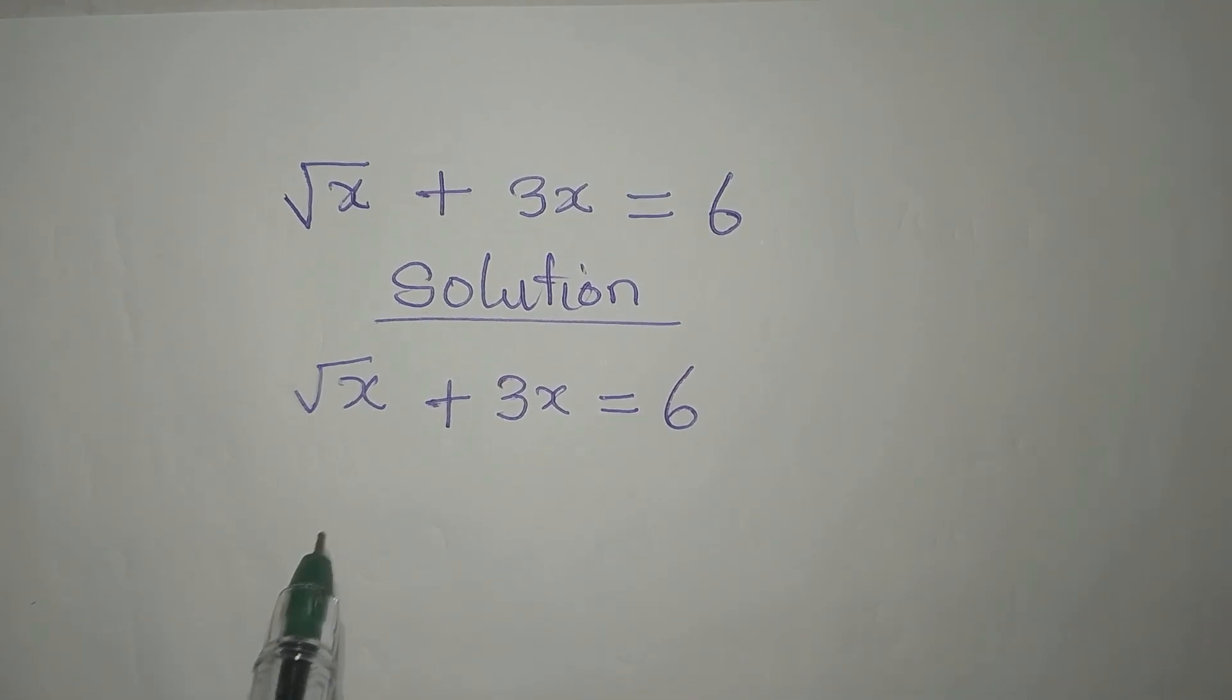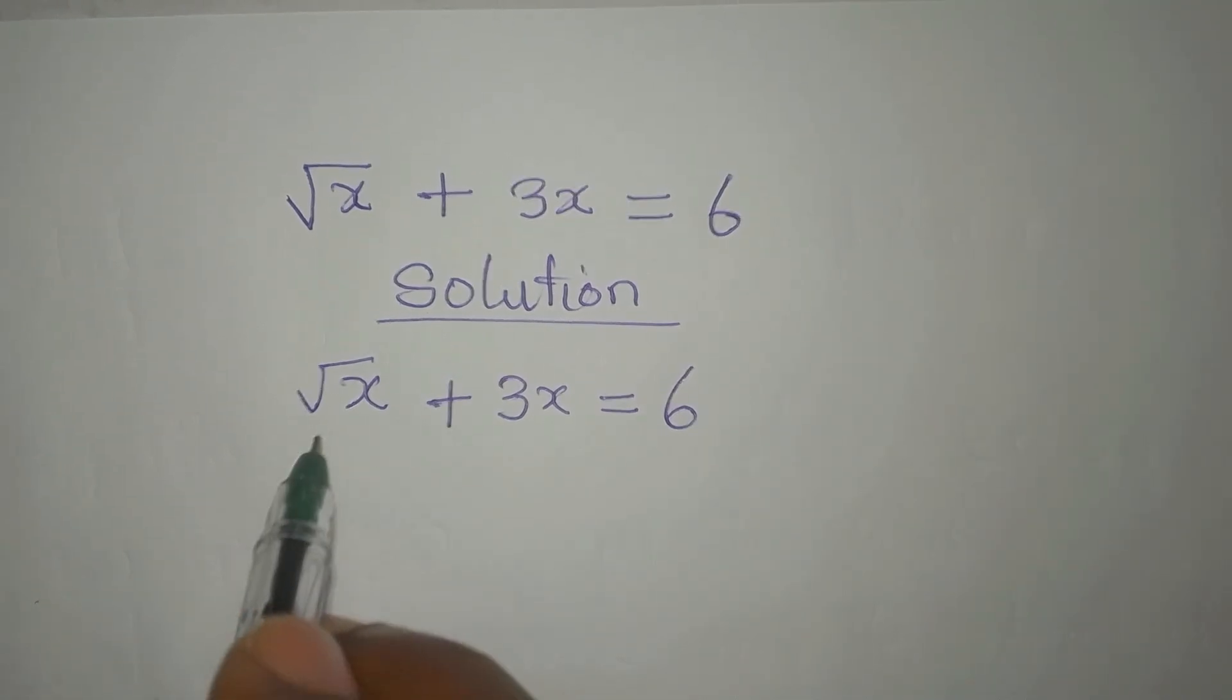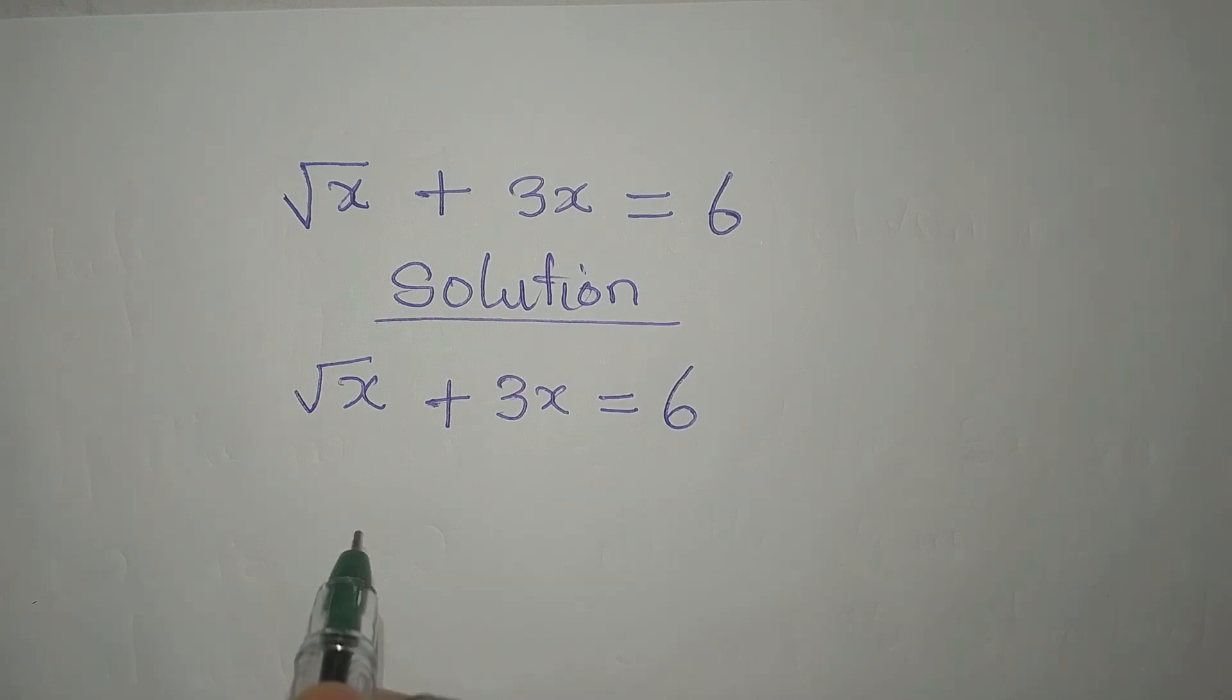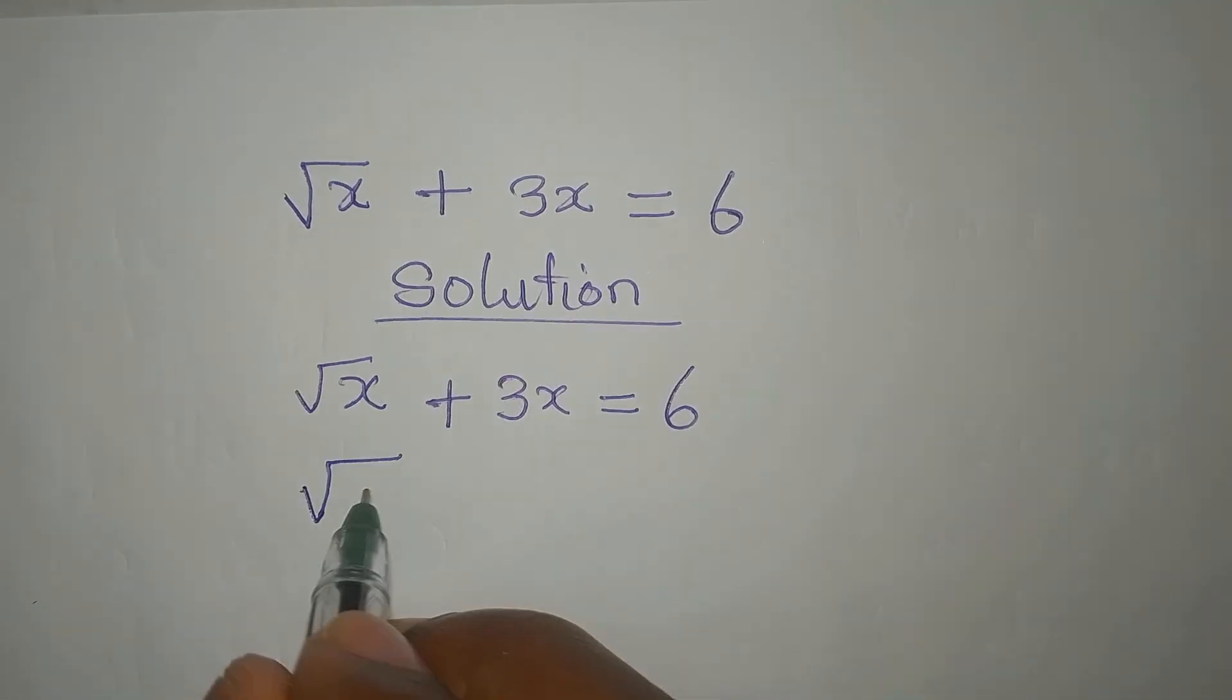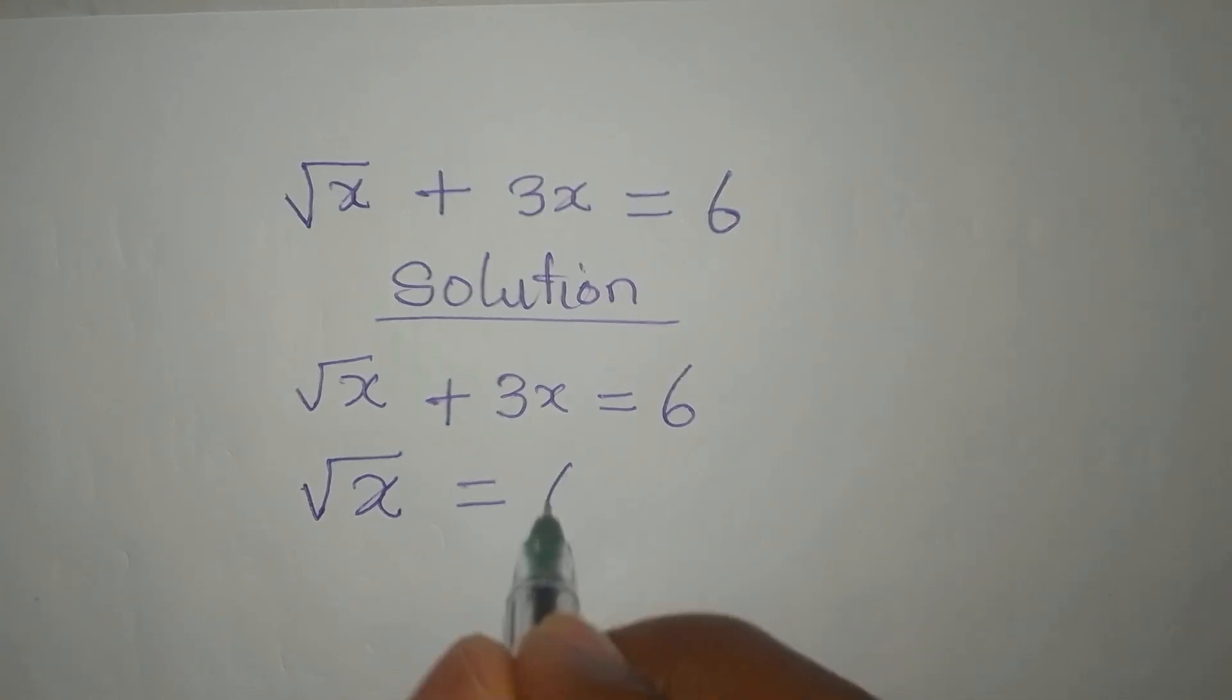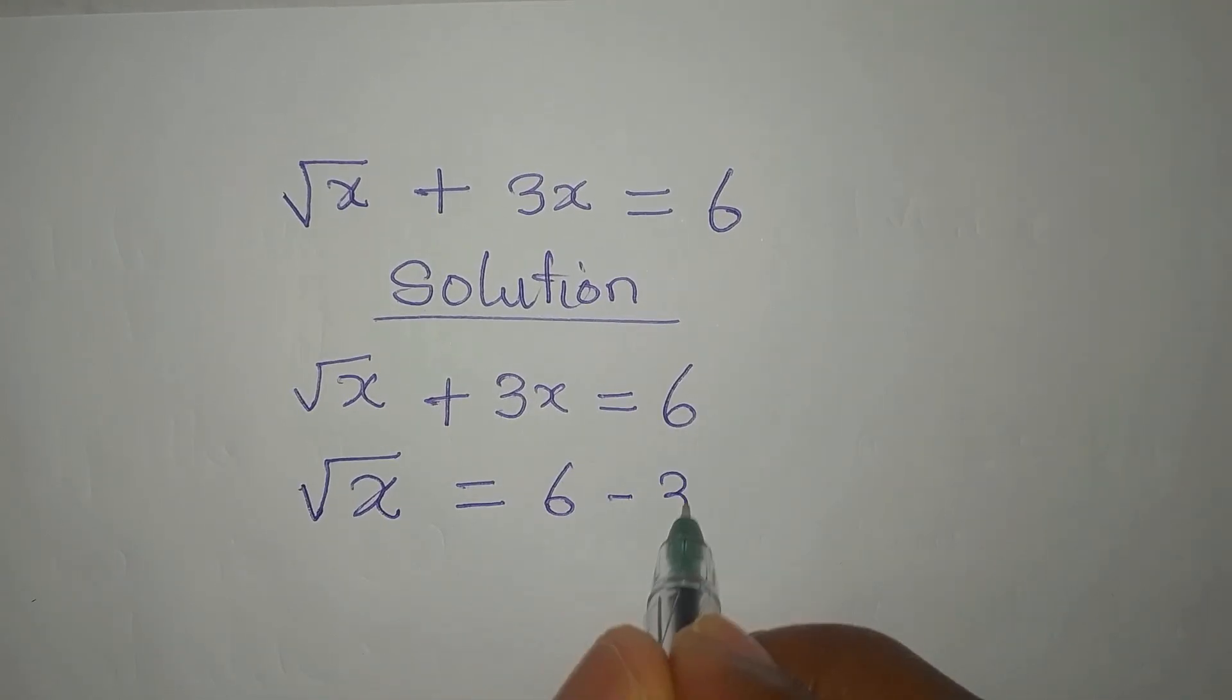Okay, so to start with, we will make root x the subject. So we have square root of x to be equal to 6 minus 3x.